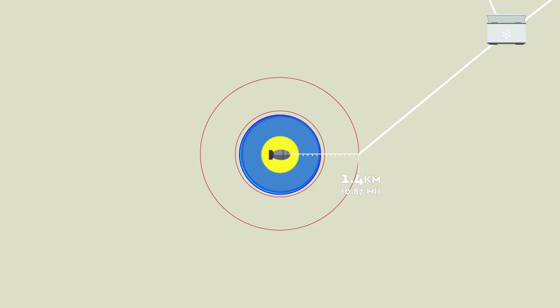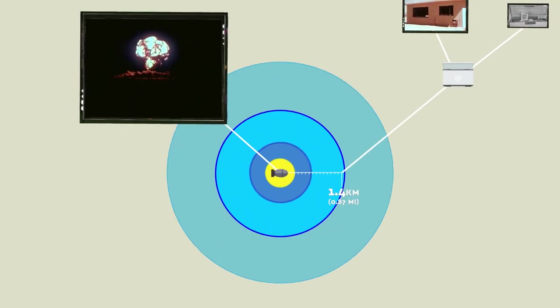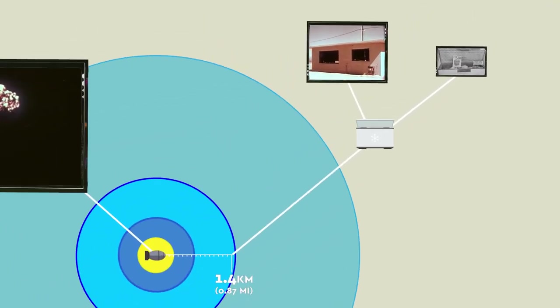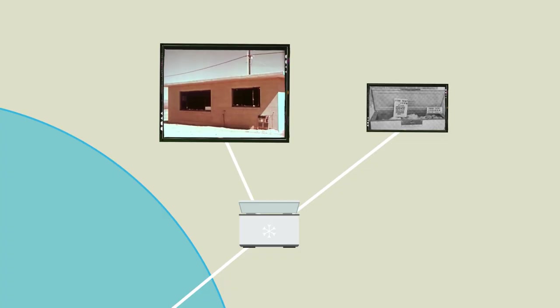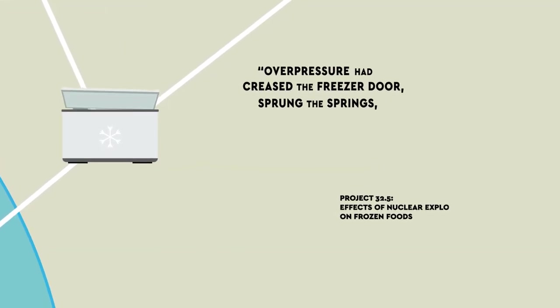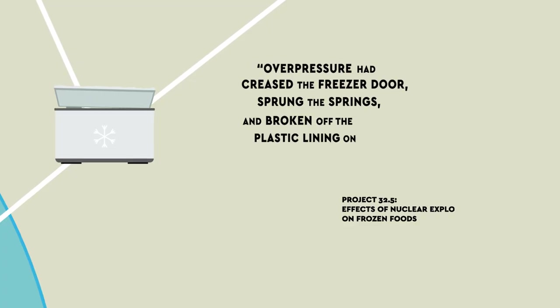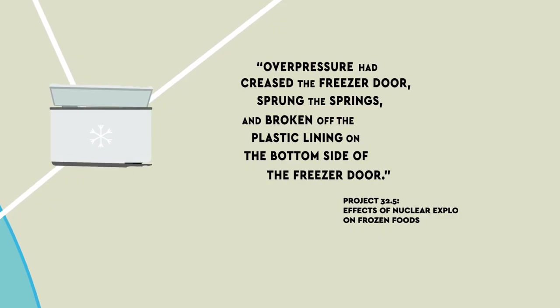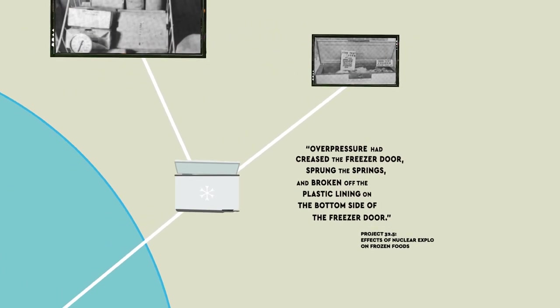After the test was complete, a fair chunk of Survival Town was blown to kingdom come. Remarkably, the freezer was still there in the house. According to the official report, overpressure had creased the freezer door, sprung the springs, and broken off the plastic lining on the bottom side of the freezer door. Essentially, it was fine.